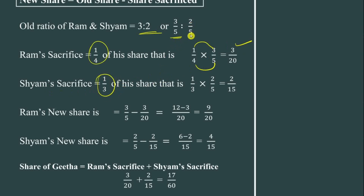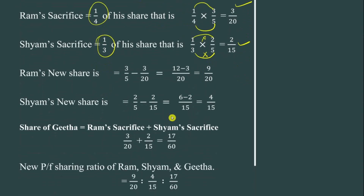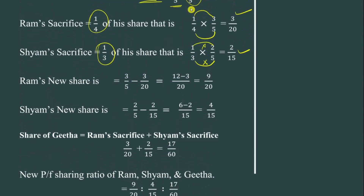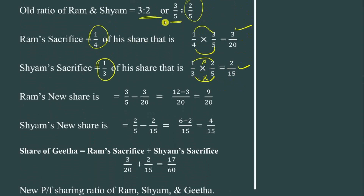Next, Sham's sacrifice is 1/3 of his share. Sham's old share is 2/5. So Sham's sacrifice = 1/3 multiplied by 2/5. That gives us 2/15. This is Sham's sacrifice. We now subtract these from old shares to get new shares.